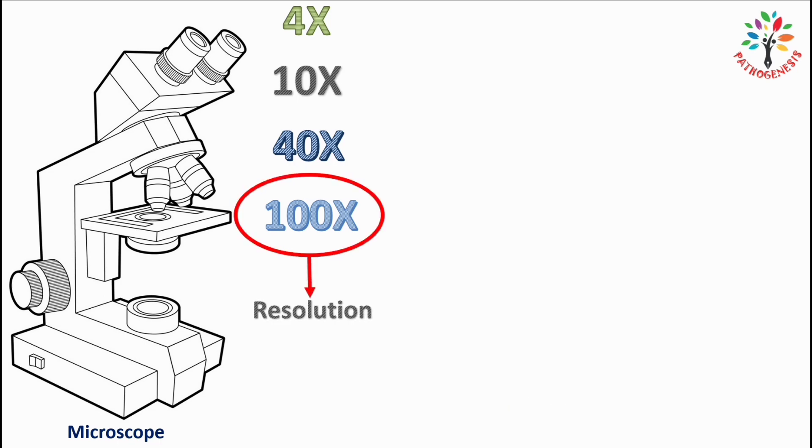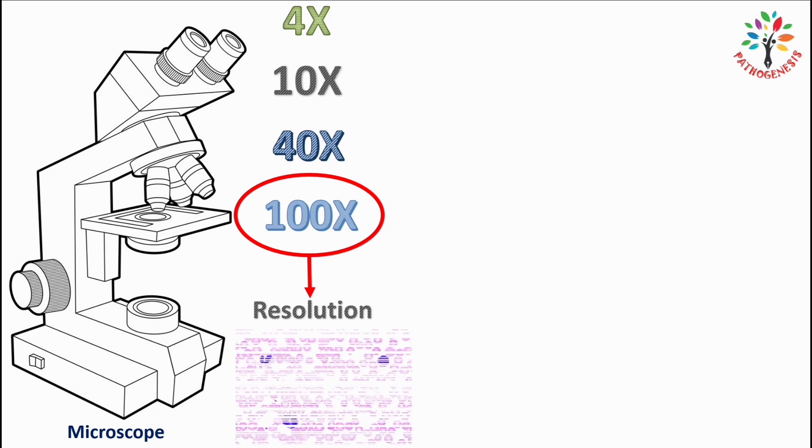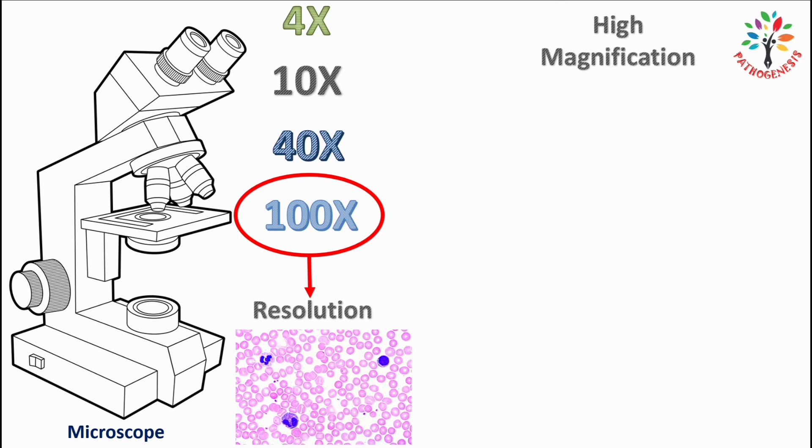Higher resolution means clear and detailed image under the microscope. To get higher resolution we need to use objective lens with high magnification. Objective lens with high magnification has shorter focal length that facilitated the use of oil.